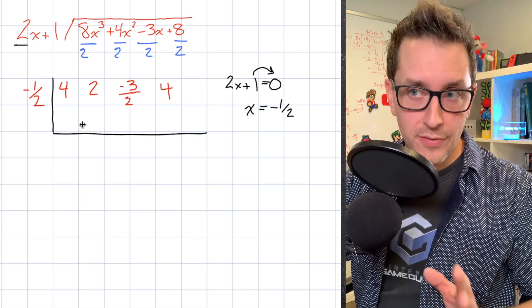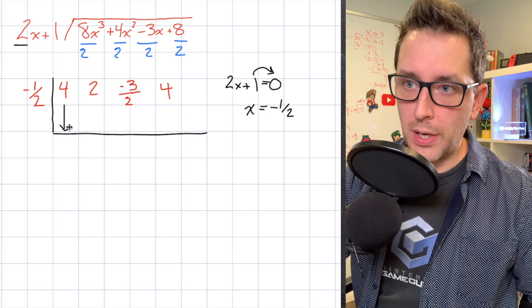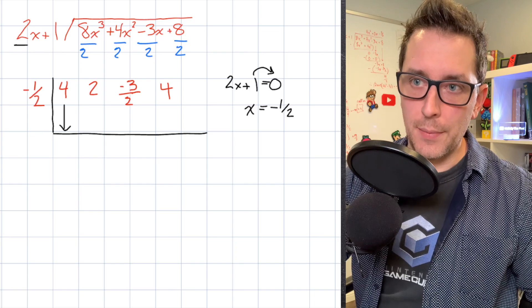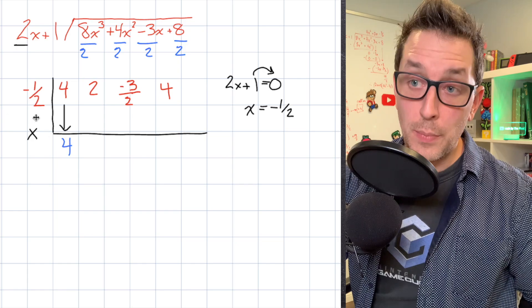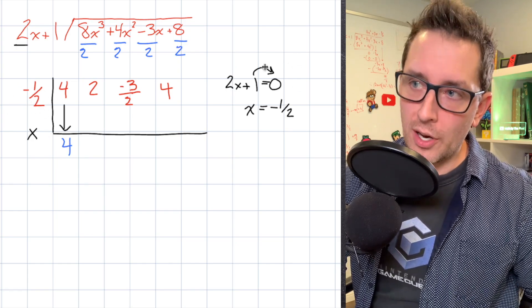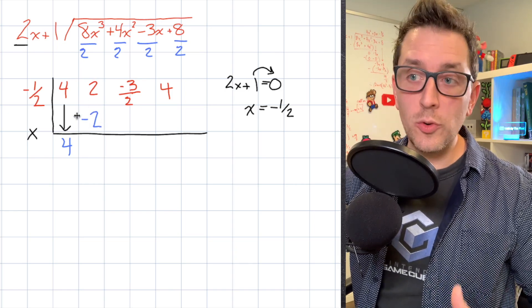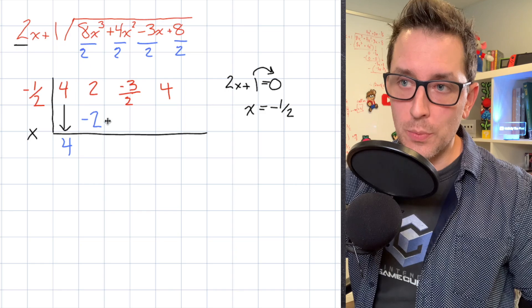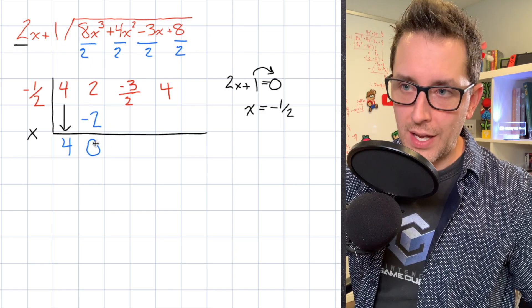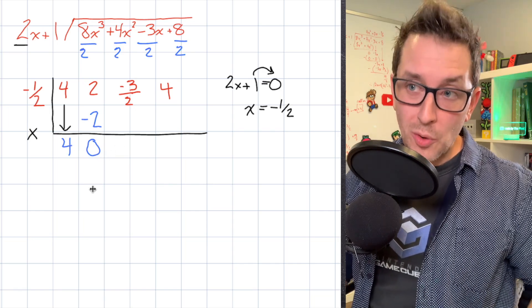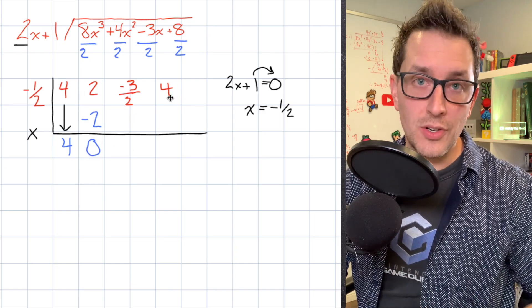The rest of the process looks very similar to regular synthetic division. We start by bringing that first value — the 4 — down and placing it below our table. We multiply that 4 by the value on the outside of our bracket, negative 1 half, and place the result underneath our second value. Then we add straight down the columns: 2 plus negative 2 gives us 0. With that step, we've completed most of what we need to do.